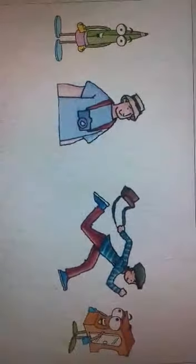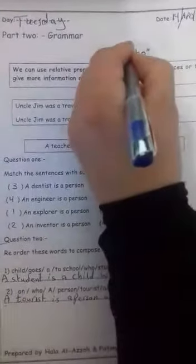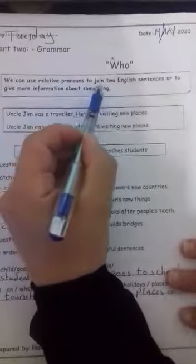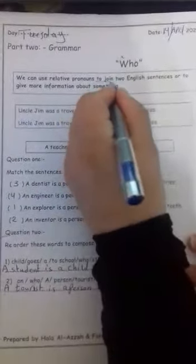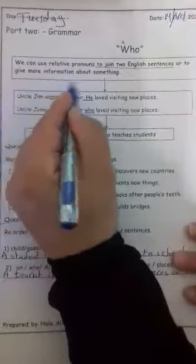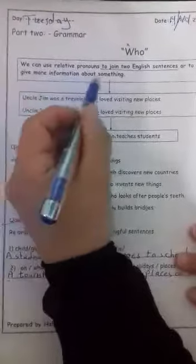Now, again here. Yes — 'who': W is a silent letter. We can use relative pronouns to join two English sentences. We put a line under the relative pronoun to join two English sentences, or to give more information about something.